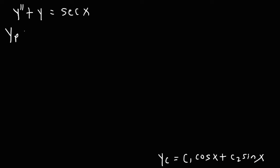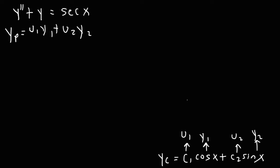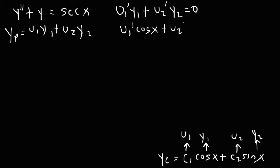Using variation of parameters, our solution for the non-homogeneous equation is in the form u1 y1 plus u2 y2. When using variation of parameters, the constants c1 and c2 are converted into functions u1 and u2. Here y1 is cosine x and y2 is sine x. The condition we impose is that u1 prime y1 plus u2 prime y2 equals 0, so replacing y1 with cosine x and y2 with sine x.